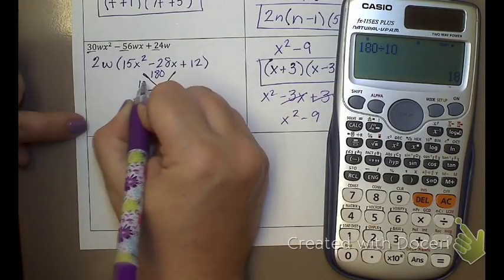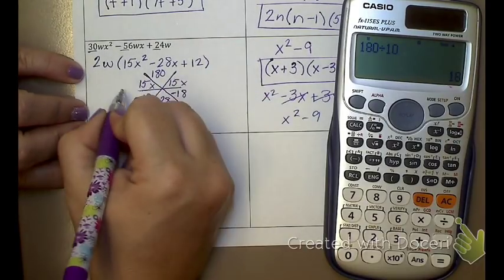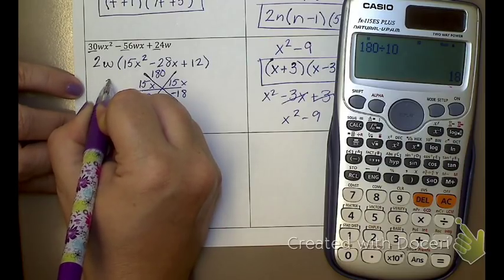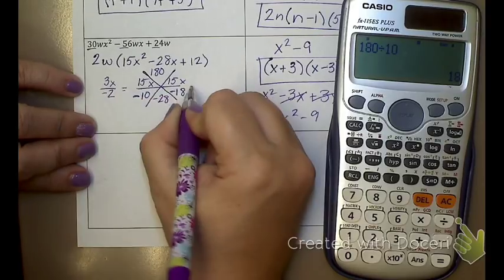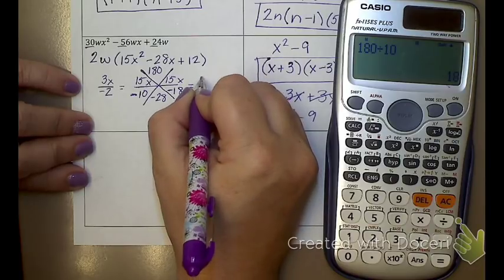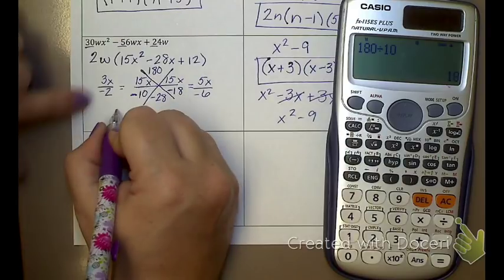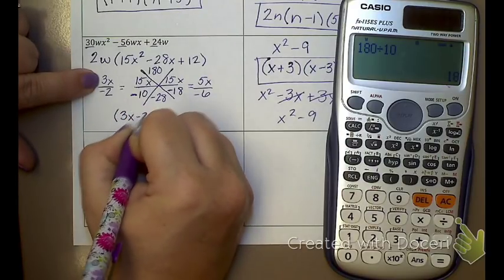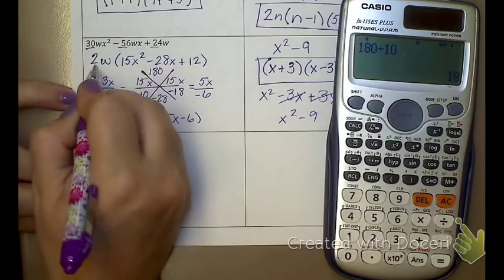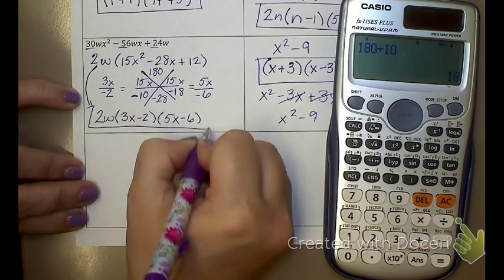So now I put A in both of these and I split up that X squared. 15 X over 10, that does reduce. I can divide by 5. And that gives me 3 X over negative 2. And over here, 15 X over negative 18. I think I can divide by 3. That'll give me 5 X over negative 6. So, one parenthesis is 3 X minus 2. The other one is 5 X minus 6. And the last step I have to remember, I have to bring down that 2 W that I took out in the first step.